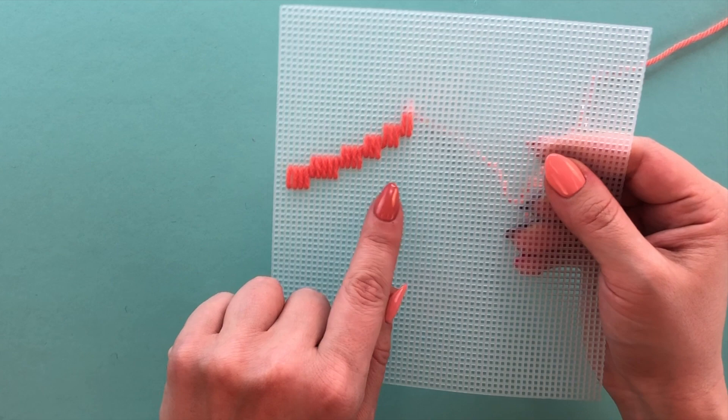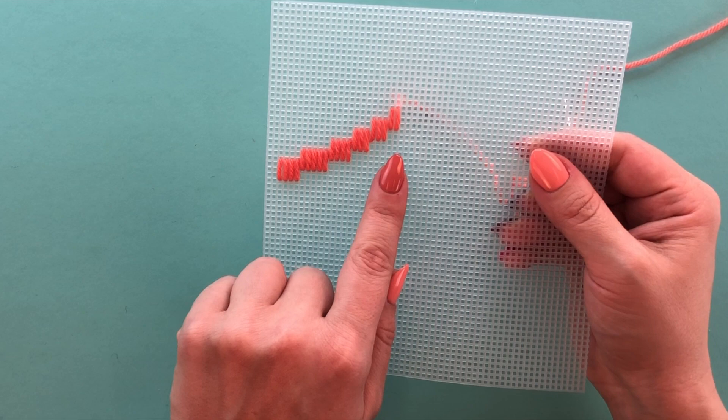All of this is communicated to you by the chart that comes with your pattern. All hello Bargello patterns come with a chart, and the chart is a really visual representation of what your stitches should be doing.